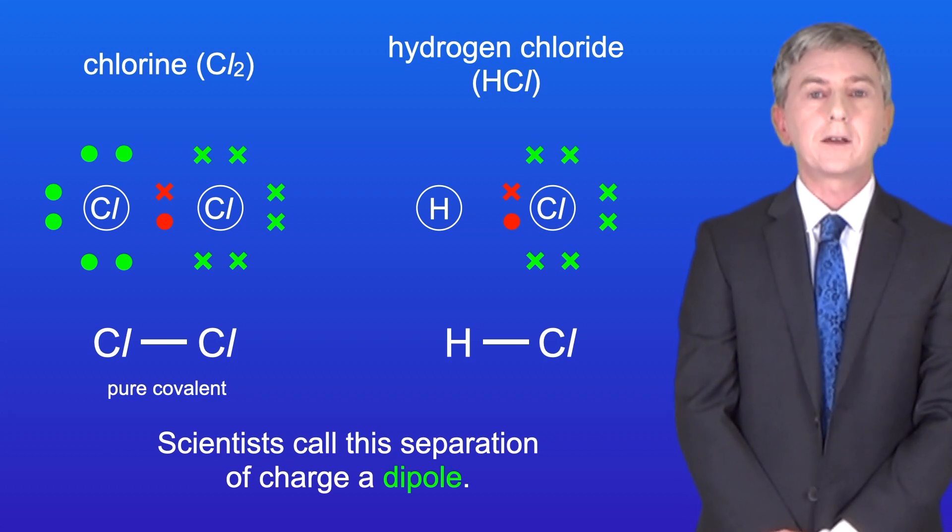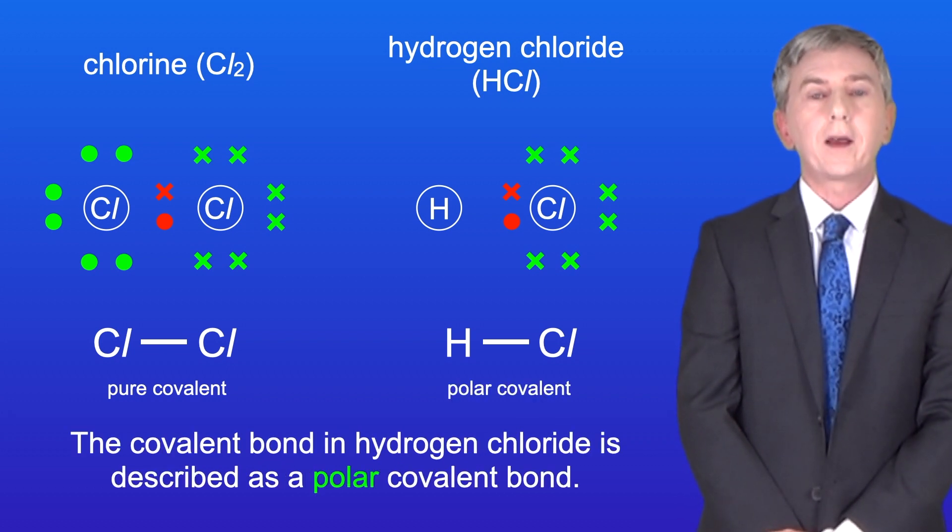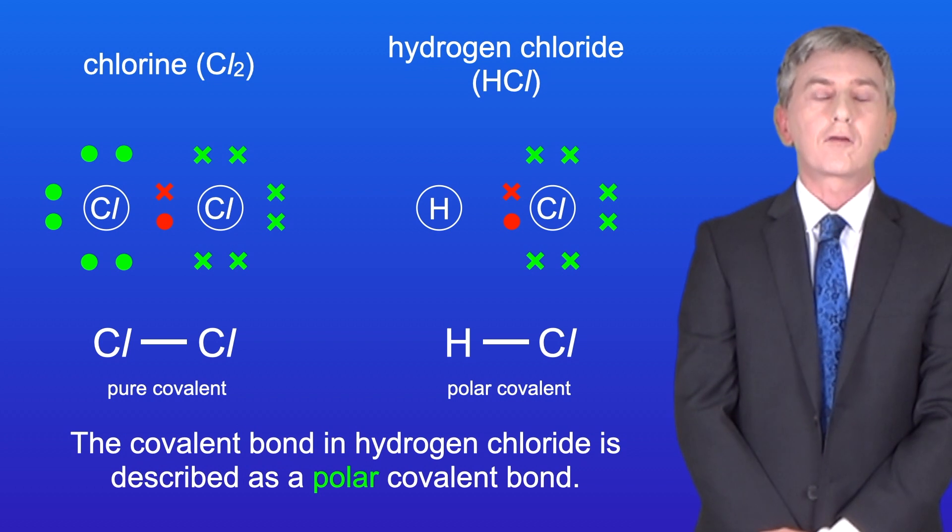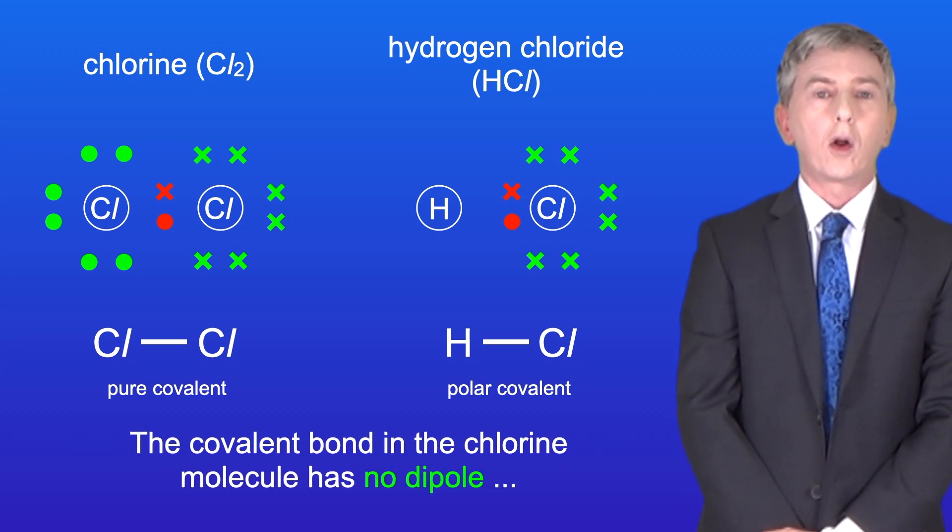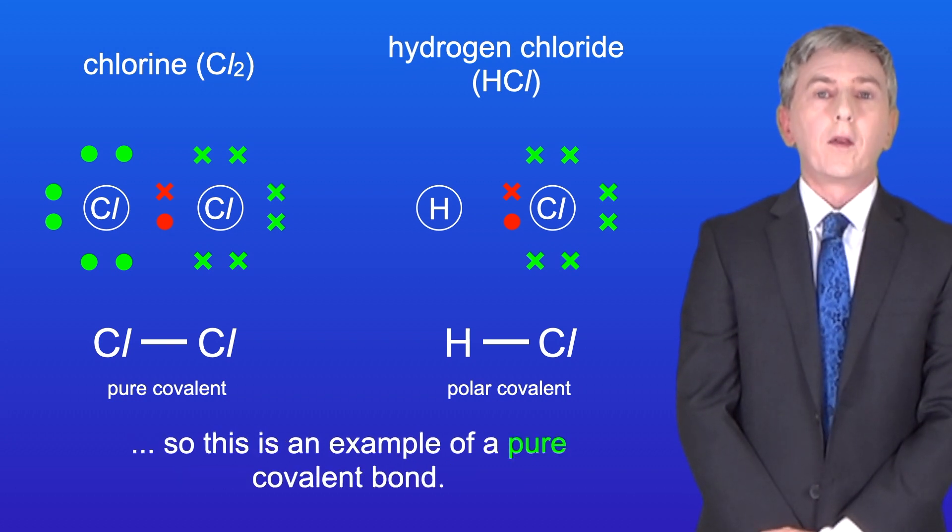Scientists call the separation of charge a dipole, and the covalent bond in hydrogen chloride is described as a polar covalent bond. The covalent bond in the chlorine molecule has no dipole, so this is an example of a pure covalent bond.